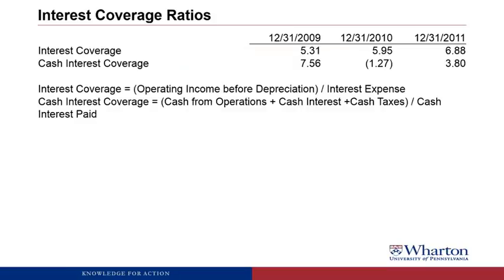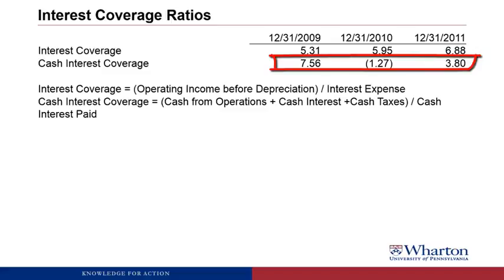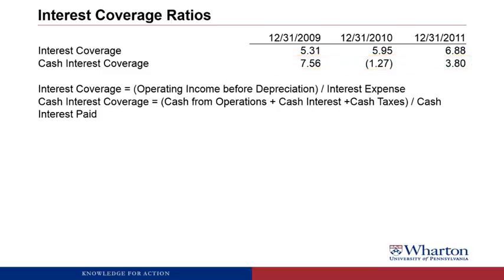Looking at Plainview's interest coverage ratios: the interest coverage ratio is trending upward and seems very healthy — the company is generating enough income before depreciation to cover its interest expense with a lot of cushion. The cash interest coverage ratio shows some volatility driven by the volatile cash from operations, which was negative in 2010. But other than that negative year, Plainview has been generating enough cash from operations to pay its cash interest obligations. Overall, we're cautiously optimistic about Plainview's ability to meet their short-term liquidity needs.